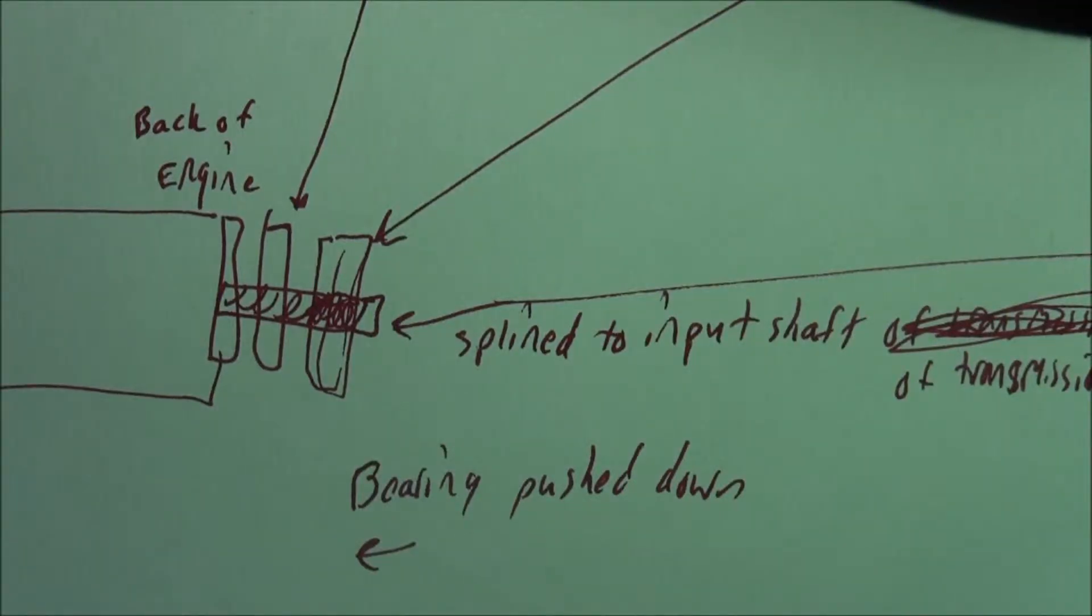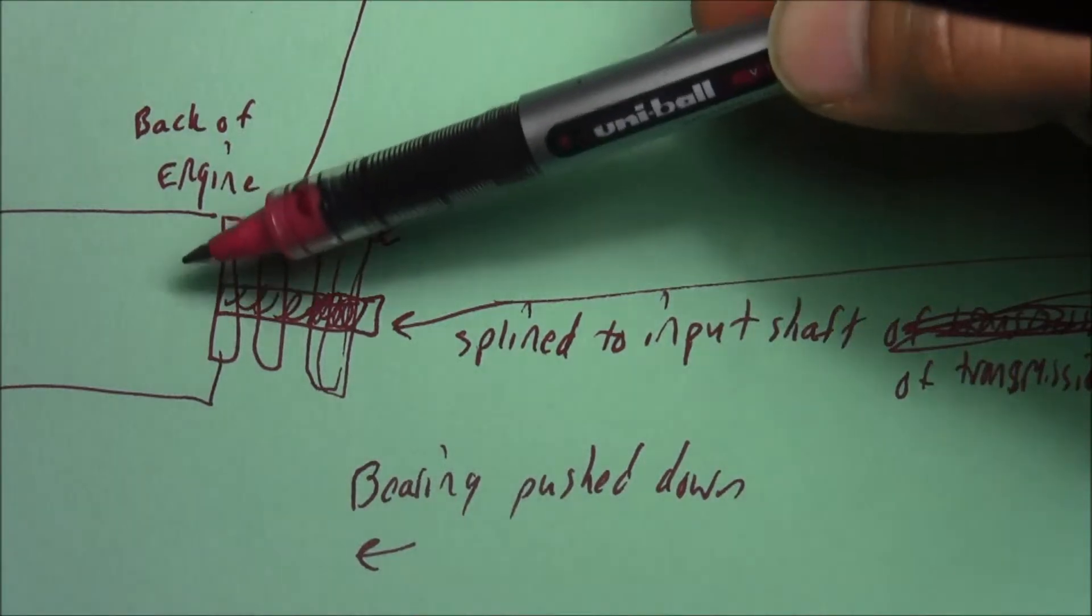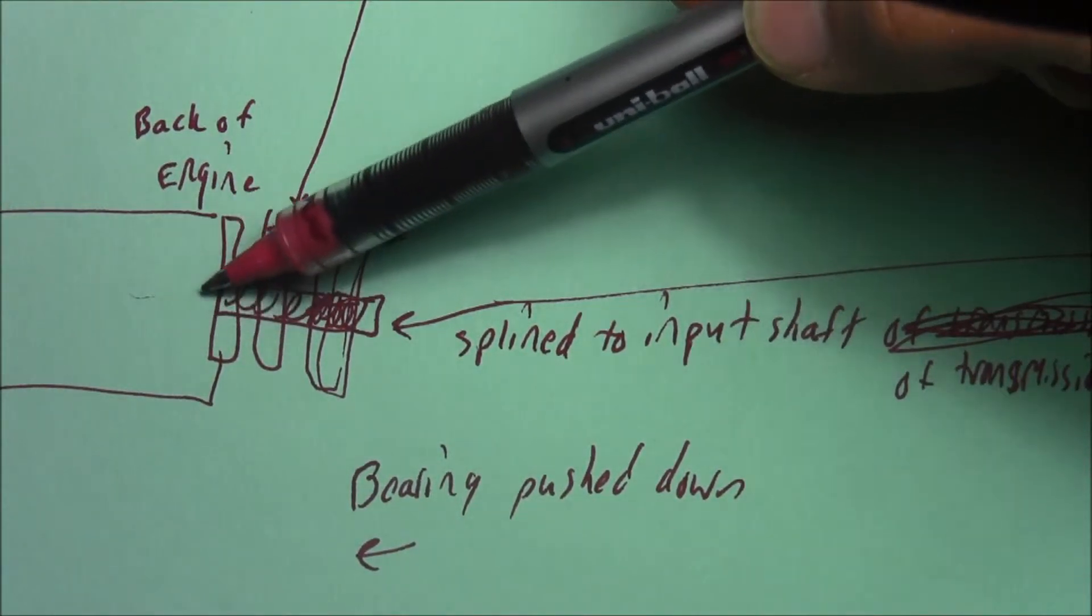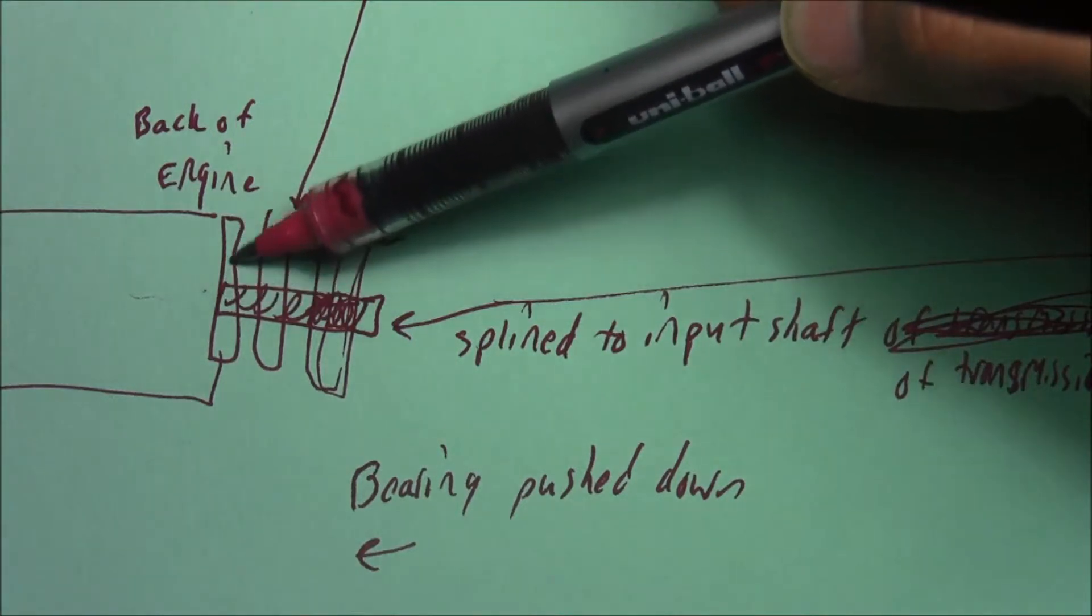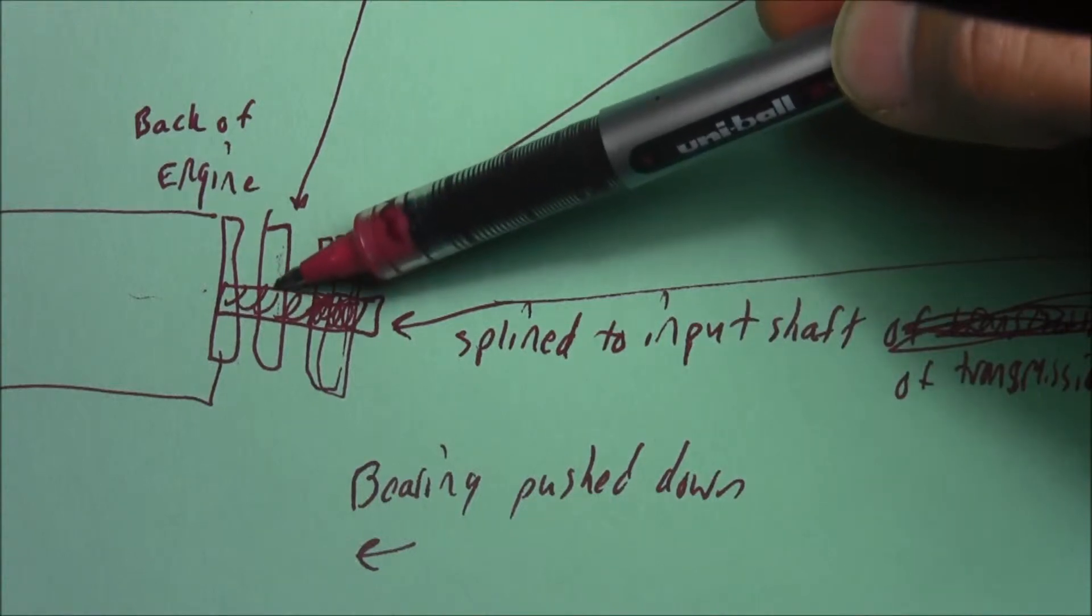So in a very crude drawing, here's the back of your engine, your crankshaft right here, and then here is your flywheel. Here's your clutch which is sandwiched in between.